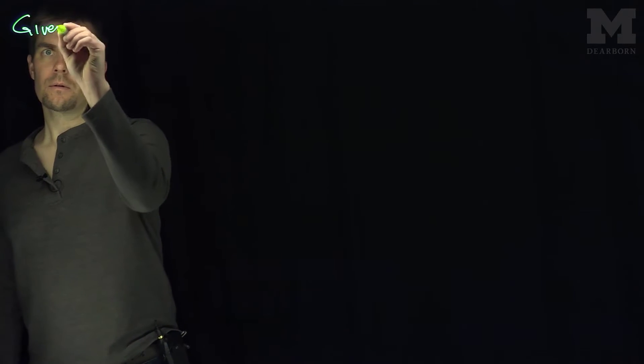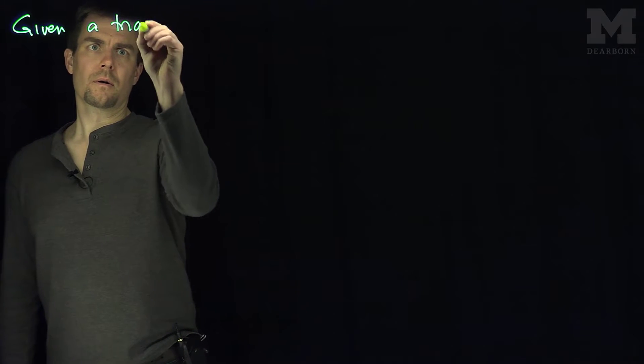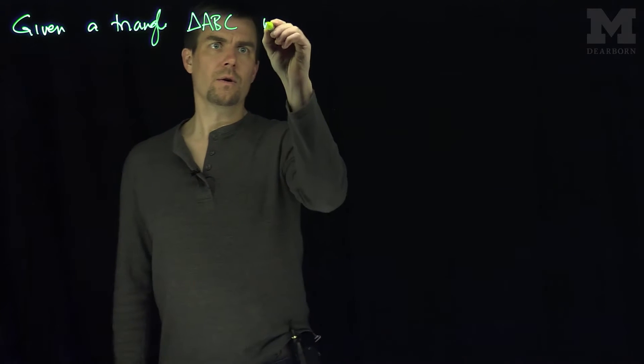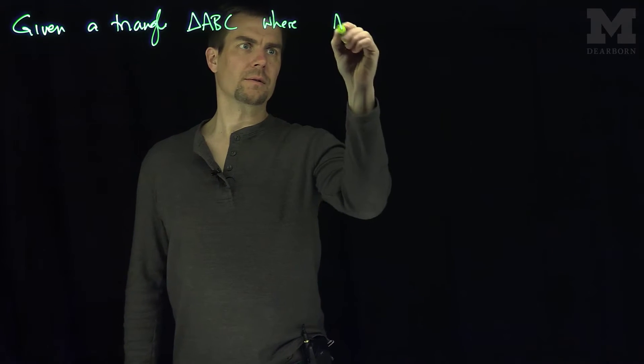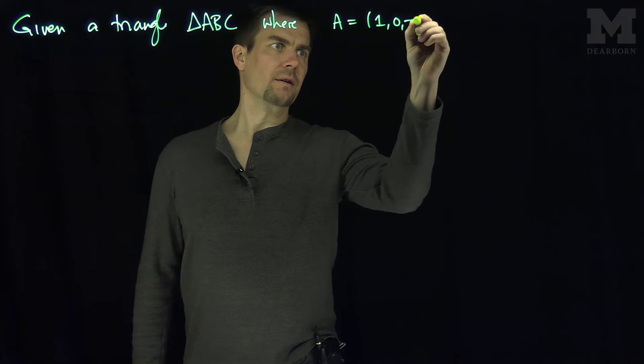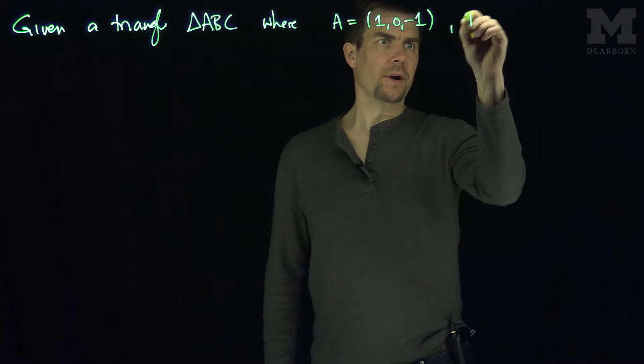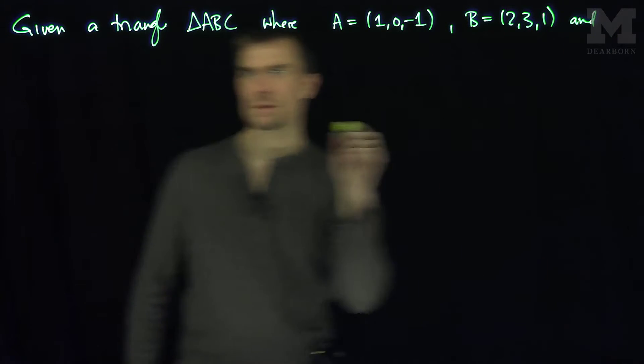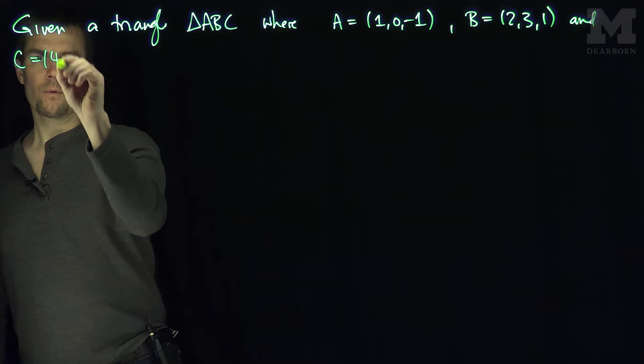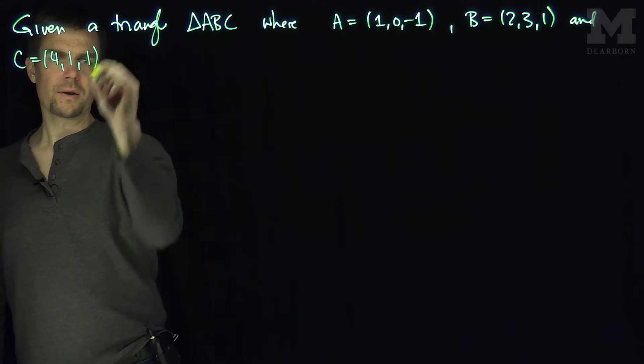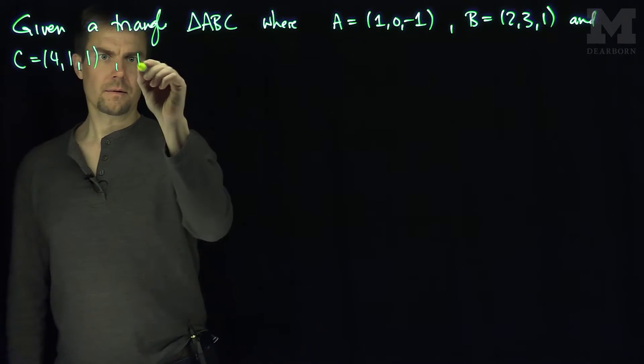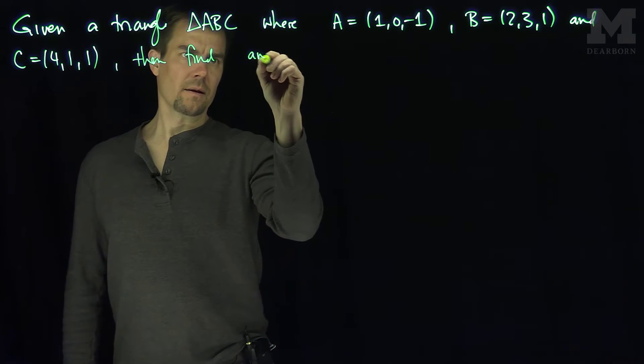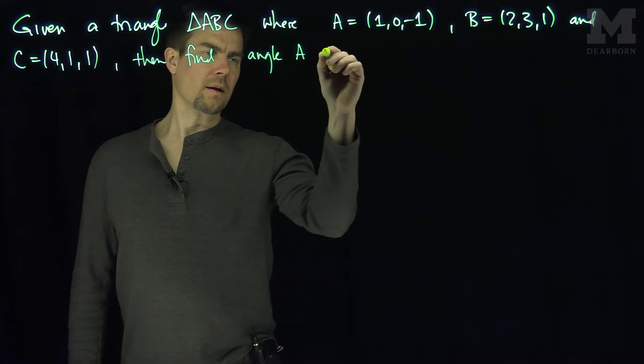If we're given a triangle ABC where A is the point (1,0,-1), B is the point (2,3,1), and C is the point (4,1,1), then find angle A in the triangle.